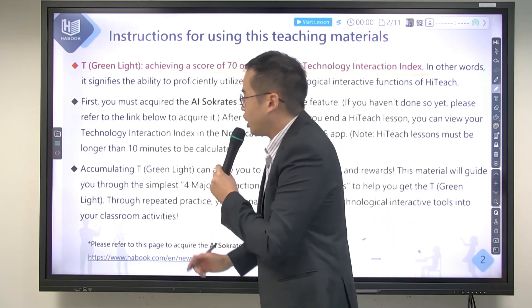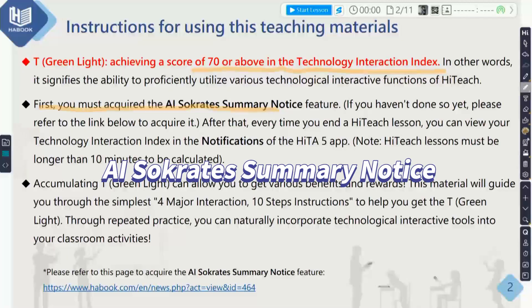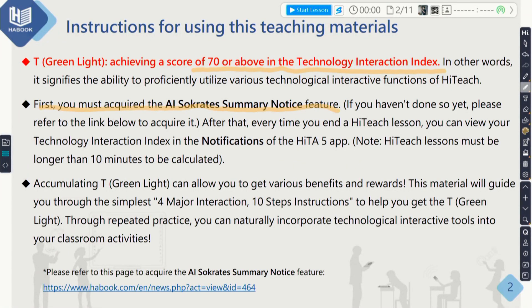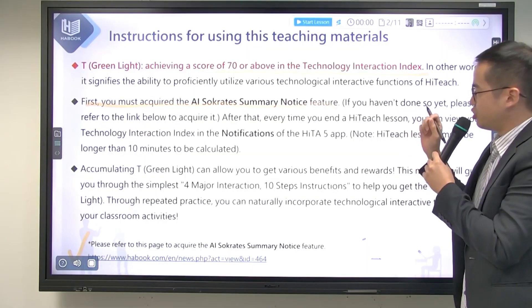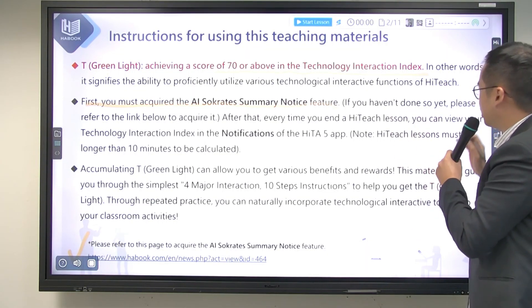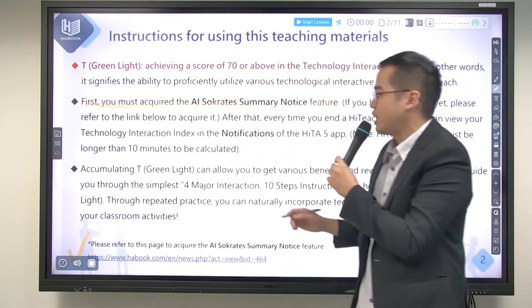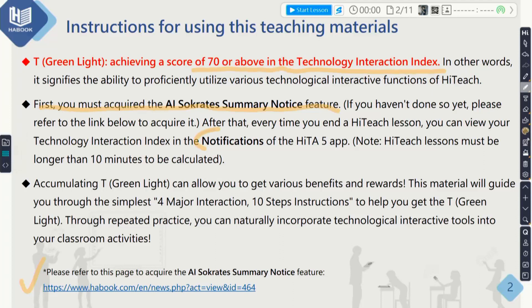If you want to get a T Green Light, first you must acquire the AI Socrates summary notice feature. If you haven't done so yet, please use this URL to acquire this feature. And after you get this feature, every time you end a HiTeach lesson, you can view your technology T interaction index in the notifications of the HiTeach 5 application on your cell phone.